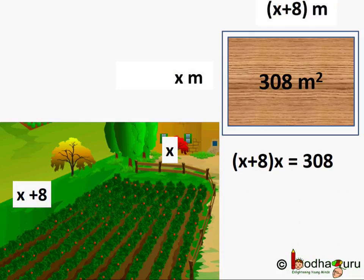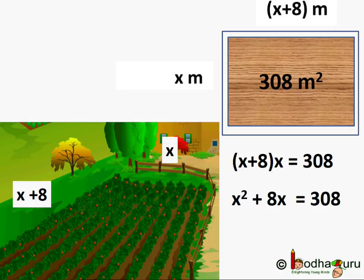Assume width is equal to x meters, so length is equal to x plus 8 meters. As area is equal to length into breadth, we get (x + 8) × x = 308. Simplifying further, we get x² + 8x − 308 = 0.